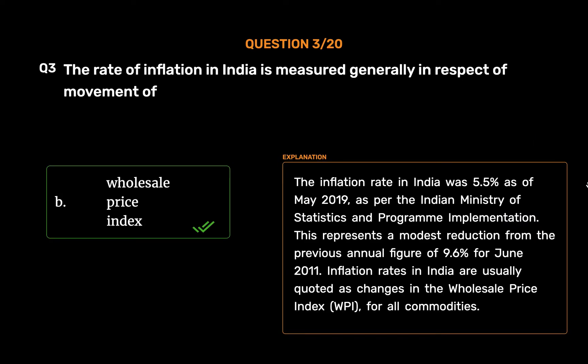The inflation rate in India was 5.5% as of May 2019, as per the Indian Ministry of Statistics and Programme Implementation. This represents a modest reduction from the previous annual figure of 9.6% for June 2011. Inflation rates in India are usually quoted as changes in the Wholesale Price Index, WPI, for all commodities.